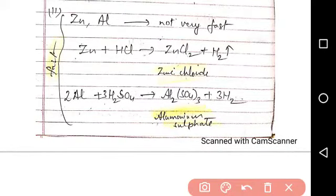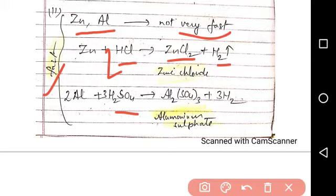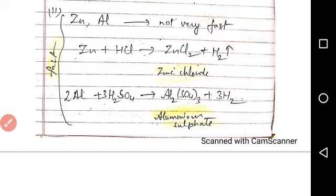Next is reaction with zinc and aluminium. When metals like zinc and aluminium react with acids like dilute HCl or dilute H2SO4, the reaction is not very fast but still it is fast. Zn + HCl forms ZnCl2 + H2. Then 2Al + 3H2SO4 forms Al2(SO4)3 + H2. Zinc chloride and hydrogen is formed. In second case, aluminium sulfate and hydrogen is formed.